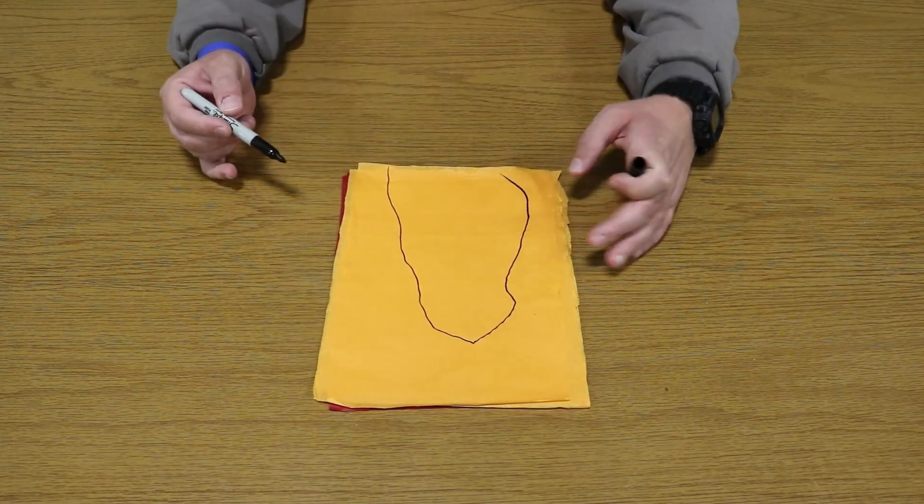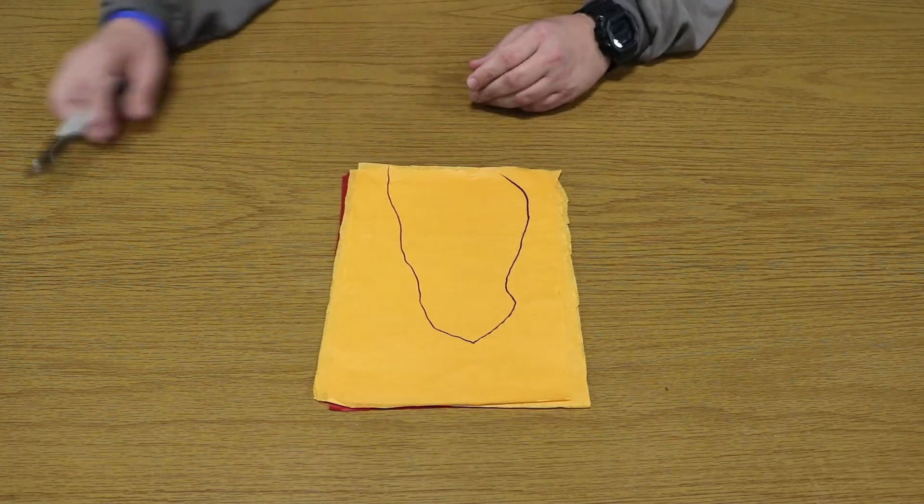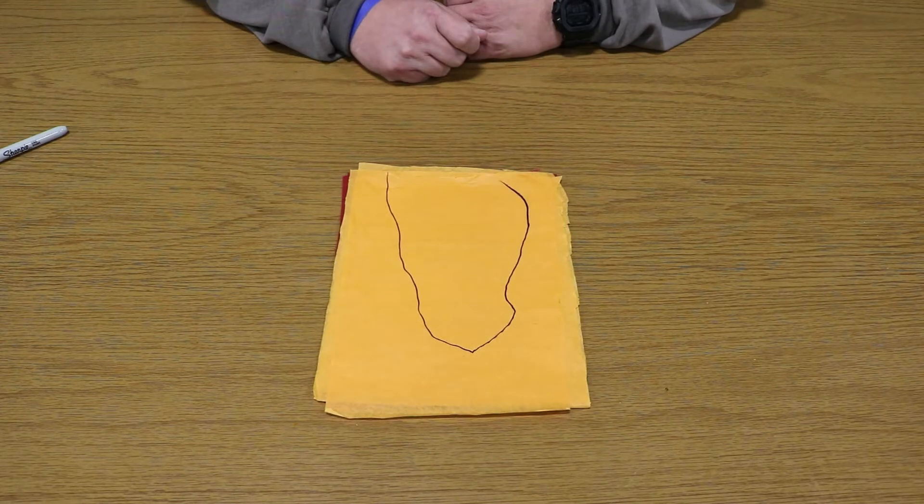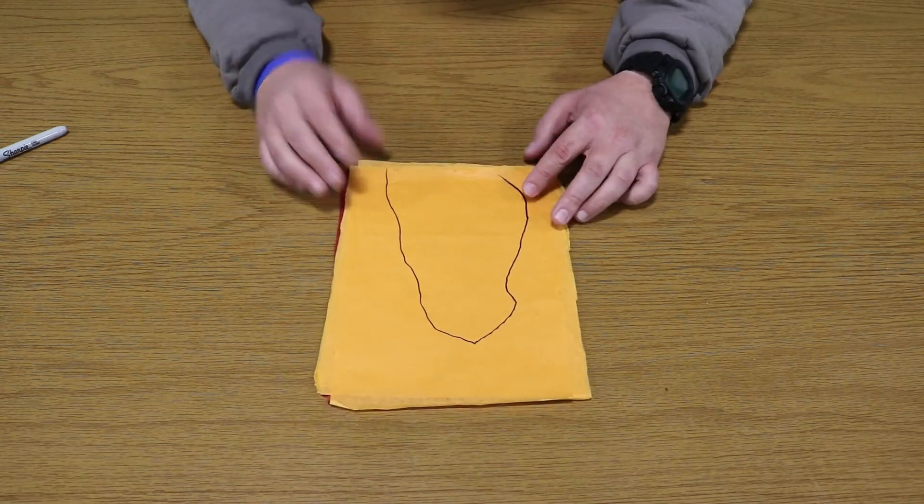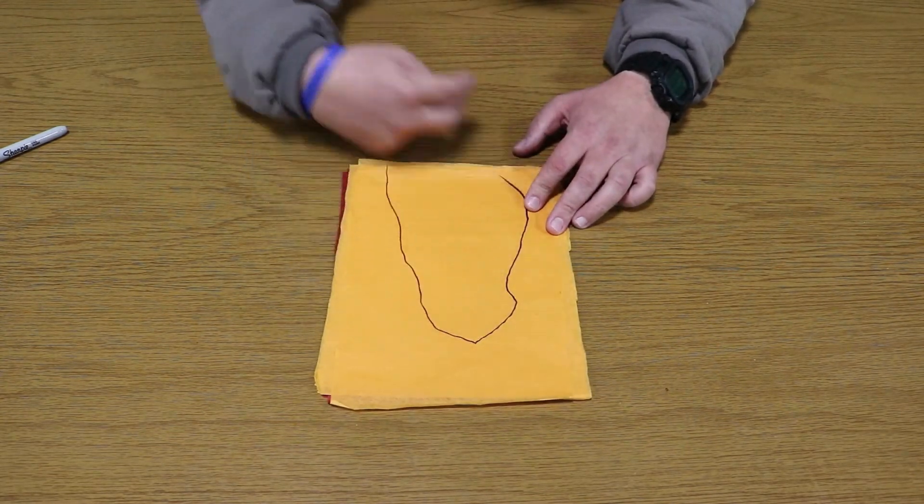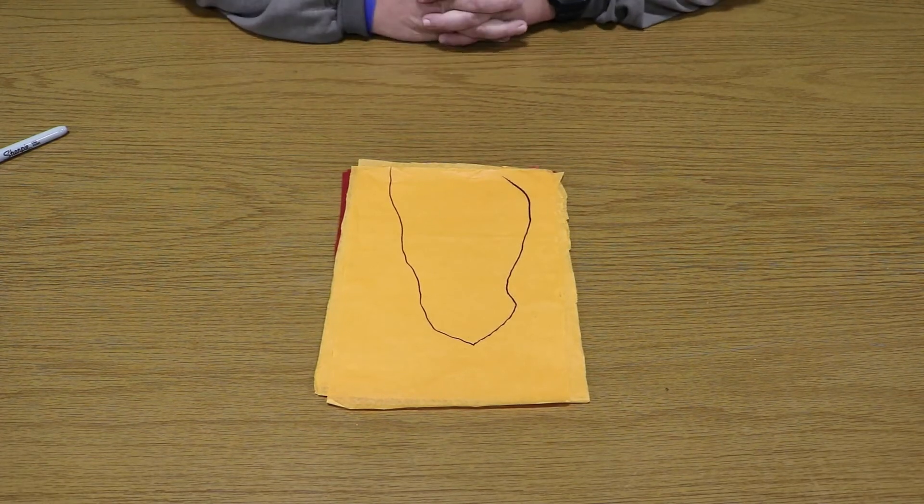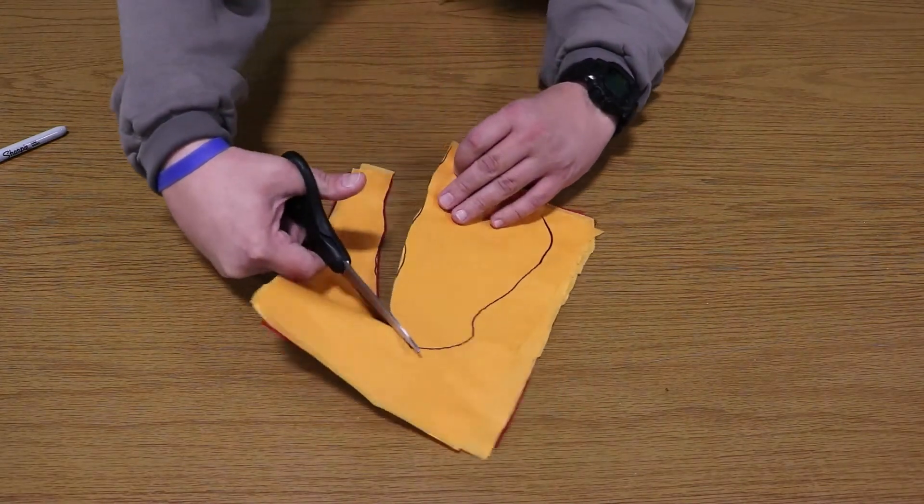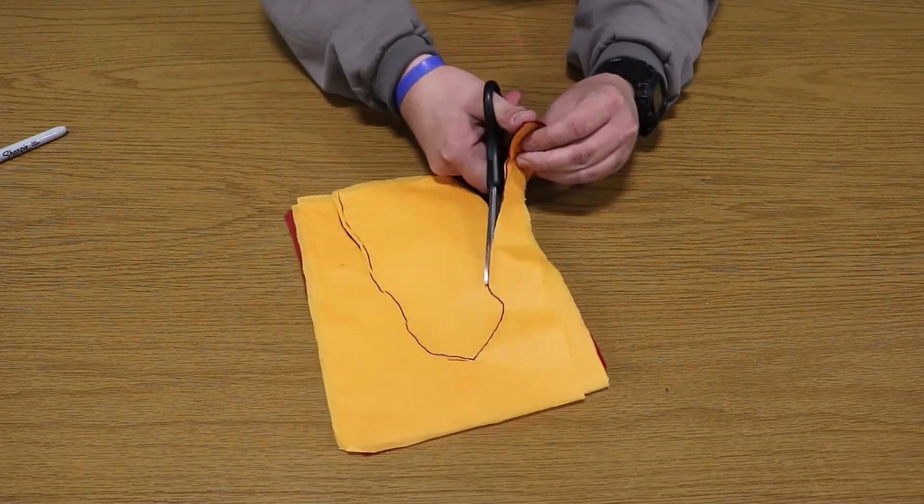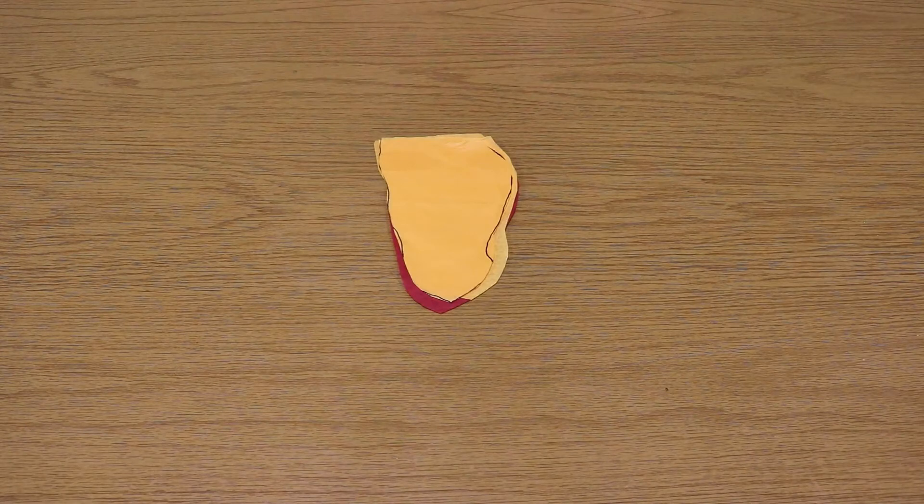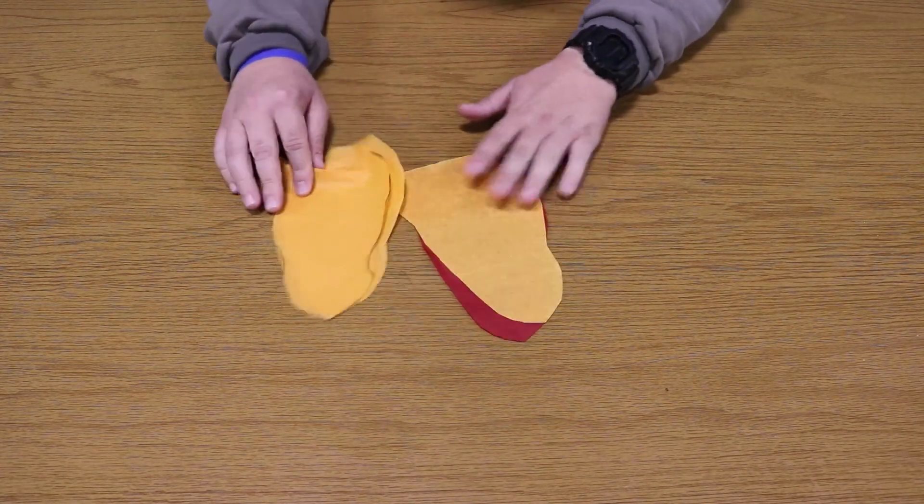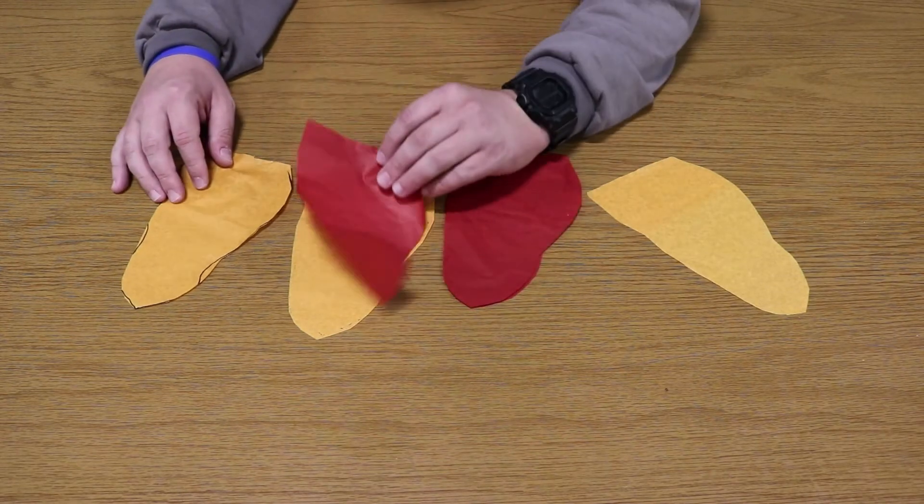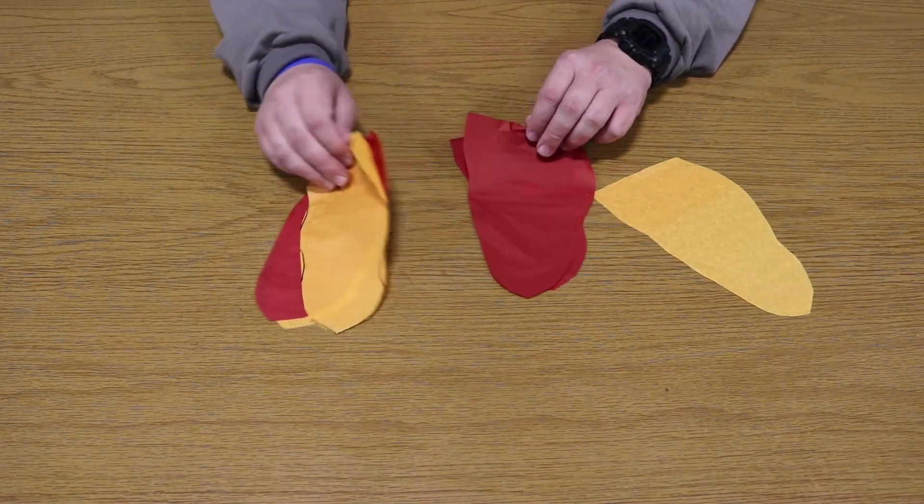It doesn't have to be perfect because at the end of the day we're going to crumble this up. Once you got this traced out or you can just go ahead and cut freehand a shape that kind of gives you a flame look, we'll go ahead and cut these out. Once we got them cut out I'm going to kind of spread them out because we're going to alternate the colors. Red, orange, red, orange.